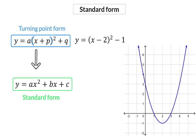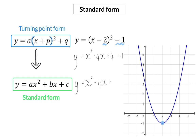Here we have an example of an equation in turning point form. In the previous video, we saw that the minus p and q value indicates the turning point. If we now simplify the equation by firstly squaring the bracket to get x squared minus 4x plus 4, minus the 1, and then add the two constant values, you will end up with the standard form: y is equal to x squared minus 4x plus 3.